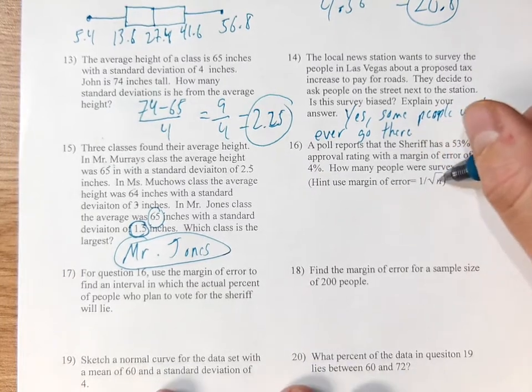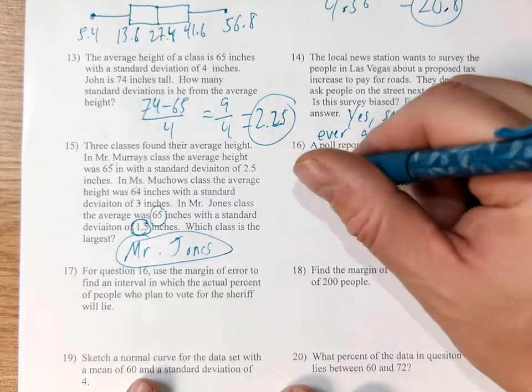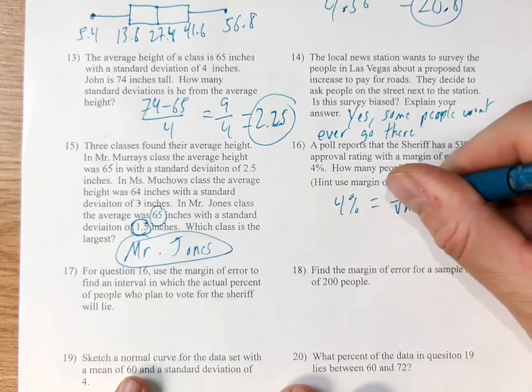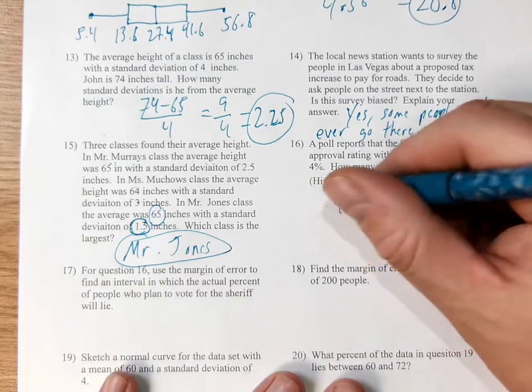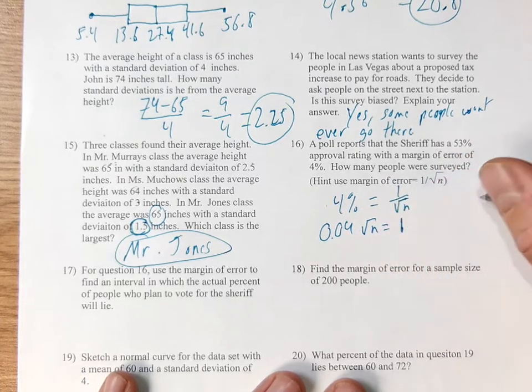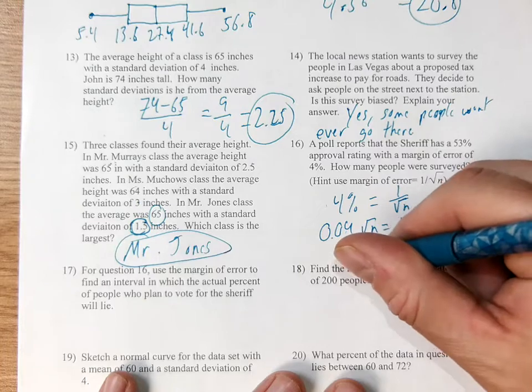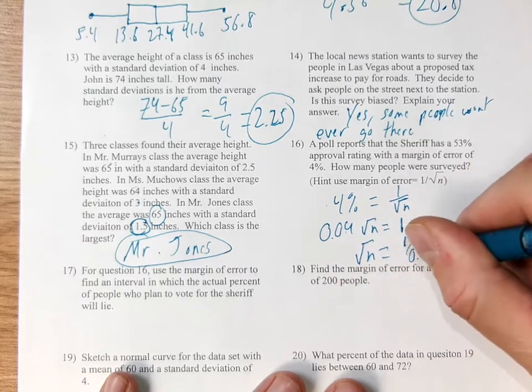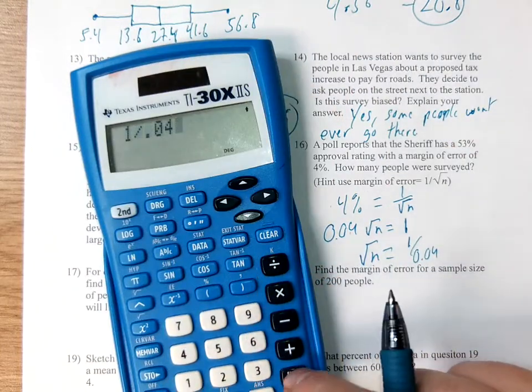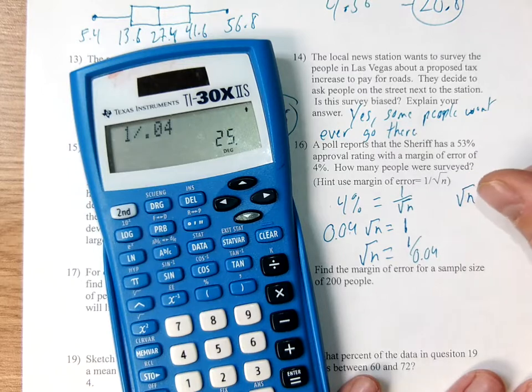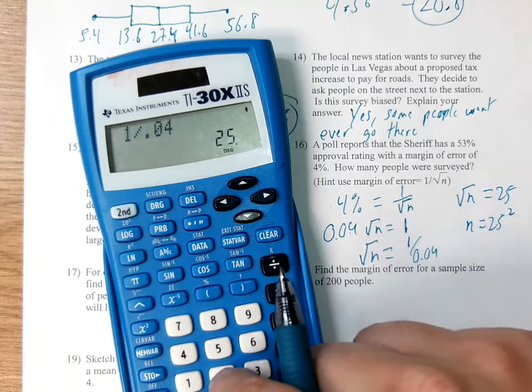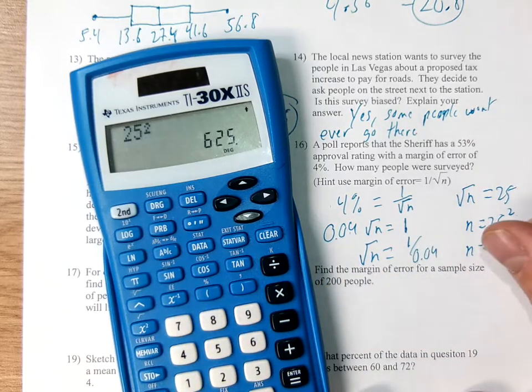Question 16. Margin of error equals 1 divided by the square root of n. So if I've got a margin of error of 4%, 4% equals 1 divided by root n. We're going to move the root n over with the 4%, make it a decimal. 0.04 root n equals 1. Move the 0.04 underneath the 1. The square root of n equals 1 divided by 4%. I'm going to divide that out. 1 divided by 4% gives me 25. The square root of n equals 25, and I'm going to square that. 25 squared, there were 625 people in this sample.